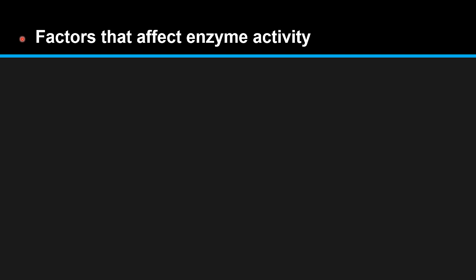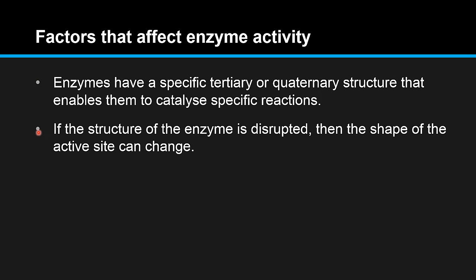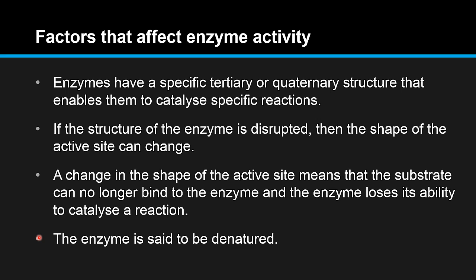Factors that affect enzyme activity. Enzymes have a specific tertiary or quaternary structure that enables them to catalyze specific reactions. If the structure of the enzyme is disrupted, then the shape of the active site can change. A change in the shape of the active site means that the substrate can no longer bind to the enzyme, and the enzyme loses its ability to catalyze a reaction. The enzyme is said to be denatured.